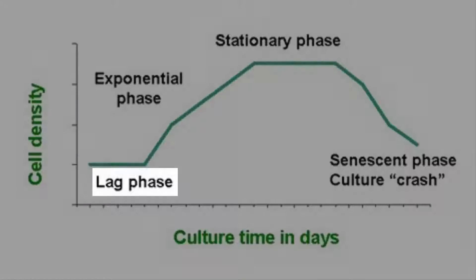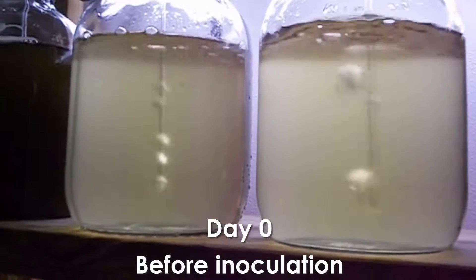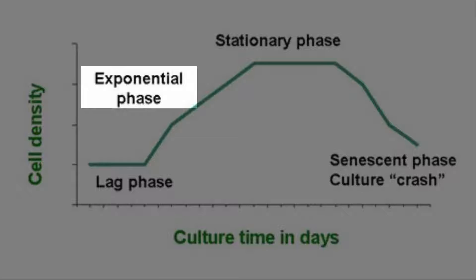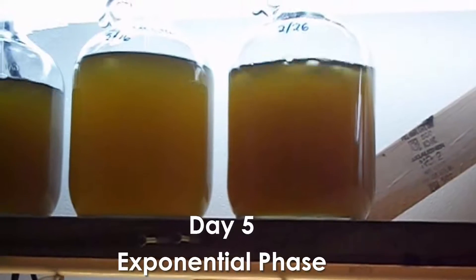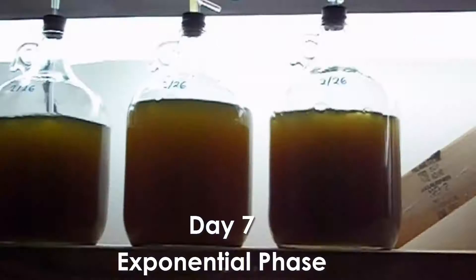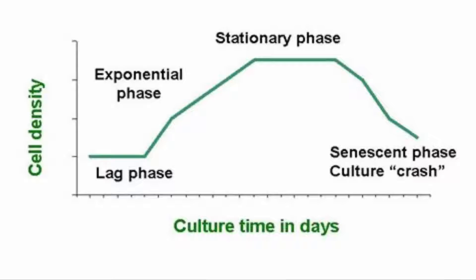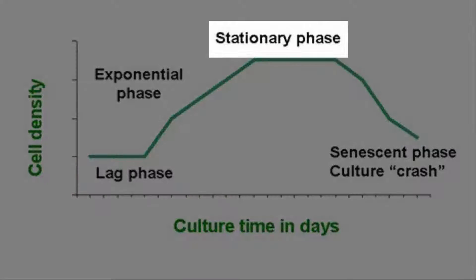Temperature, light availability, and nutrients will influence the doubling rate of phytoplankton cultures, usually beginning with a short lag phase as the plant cells become acclimated to their environment. The population then enters the exponential phase of growth until it approaches its carrying capacity, based on limiting nutrient uptake, light or self-shading, and water quality parameters such as primarily pH. This is a period when the population enters its stationary phase.